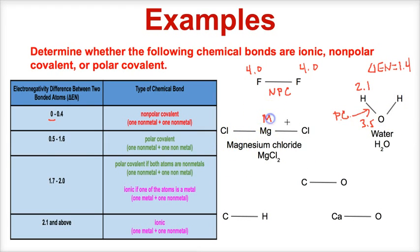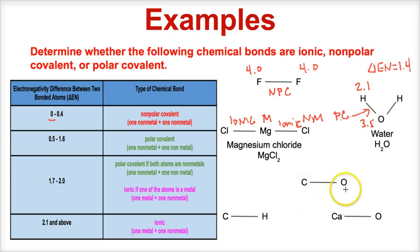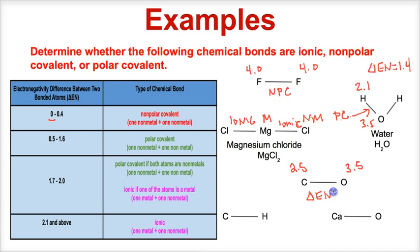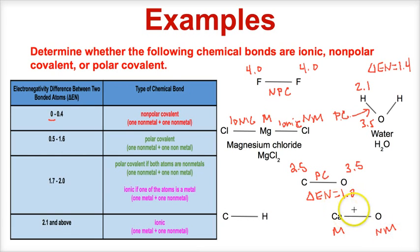Looking at the next example, we've got a metal and a nonmetal, so right away that tells you it's ionic. The following compounds with metal and nonmetal combinations are also ionic. For carbon bonded to oxygen — a nonmetal and a nonmetal — so we know it's covalent. Carbon has an electronegativity of 2.5 and oxygen is 3.5. The absolute value of 3.5 minus 2.5 gives an electronegativity difference of 1.0, which falls in the polar covalent range. The next compound with a metal and nonmetal is ionic.